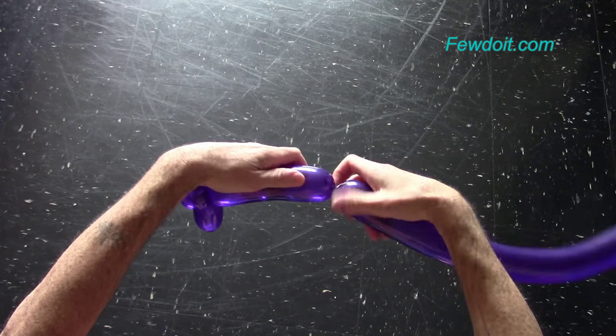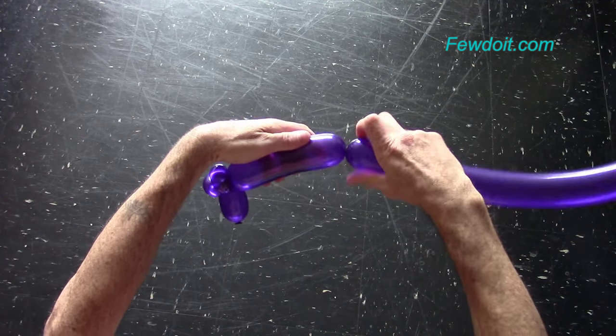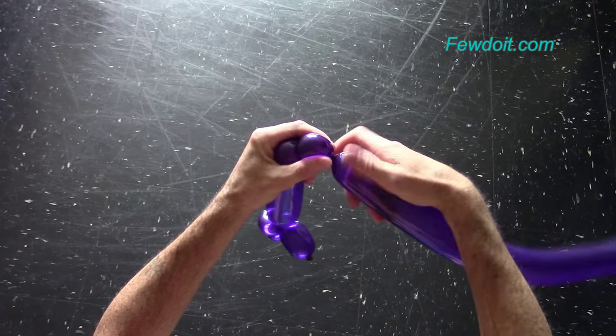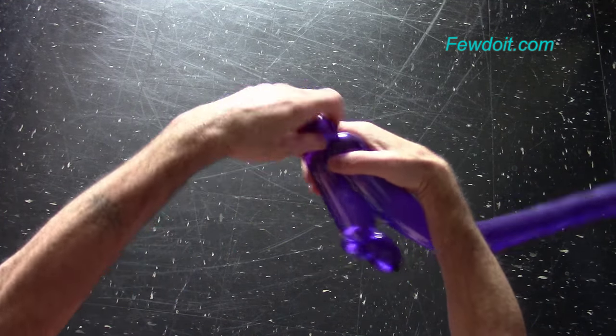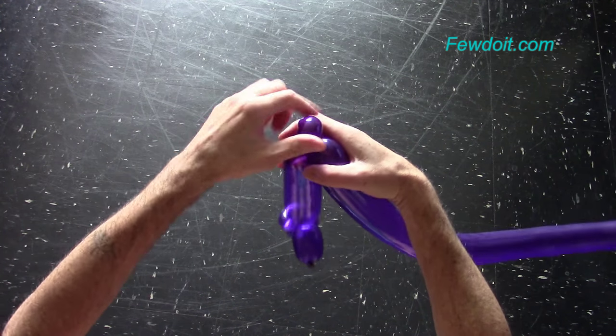Twist the fourth about 15 maybe 18 cm long bubble. Twist the fifth soft about 3 cm long bubble. Lock both ends of the fifth bubble in one lock twist.